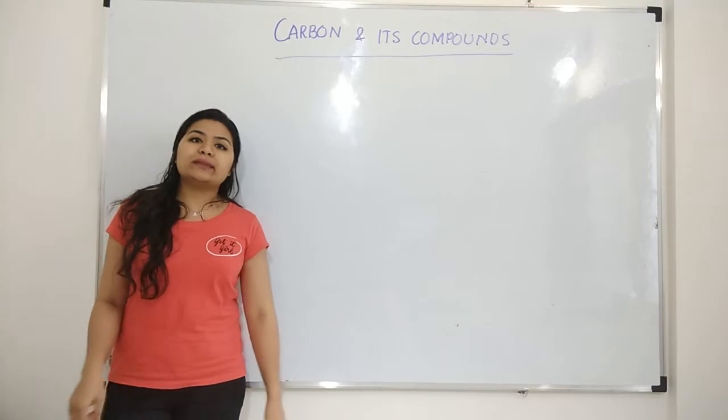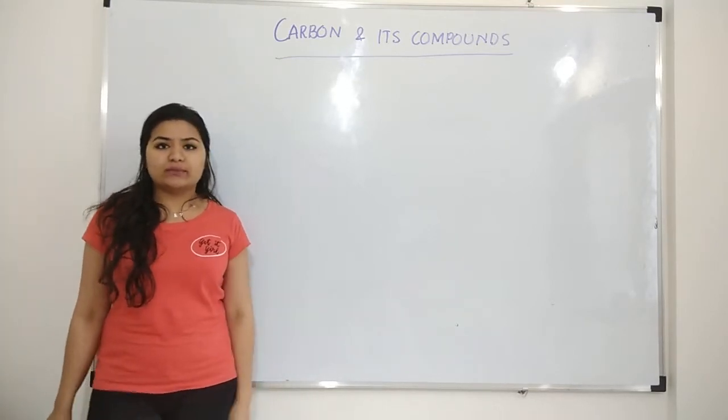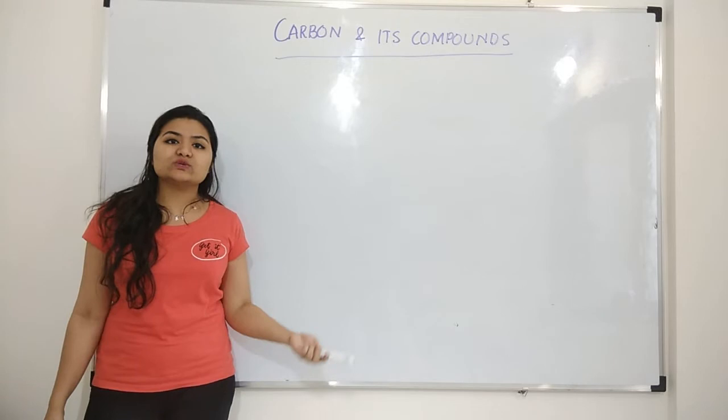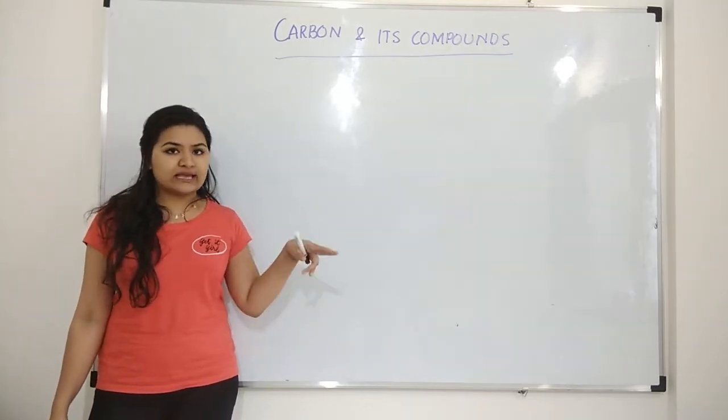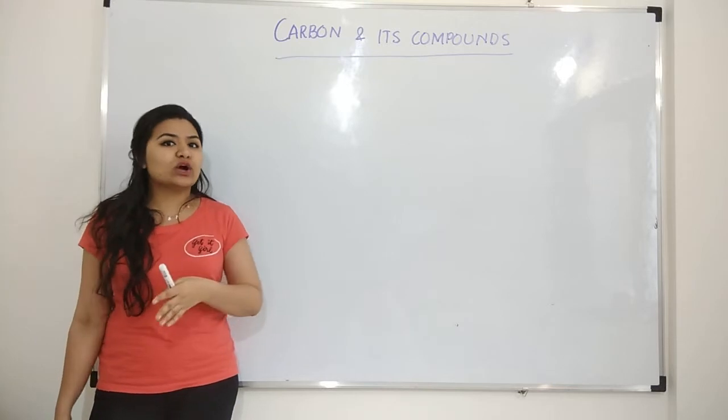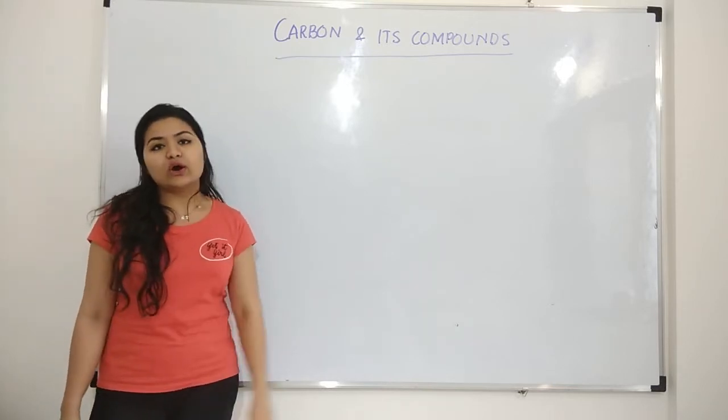So all the elements are placed in the periodic table according to their atomic numbers. So if some element has one atomic number that will be kept first, two atomic number second. So carbon has six atomic numbers so it is given the place six.